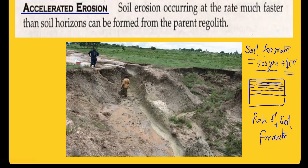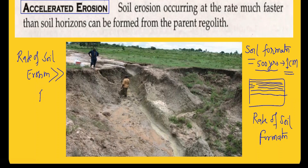But in the present time, due to bad agricultural practices, deforestation, overgrazing, and river flooding, soil erosion is increasing. When the rate of soil erosion is greater than the rate of soil formation, it is known as accelerated erosion.